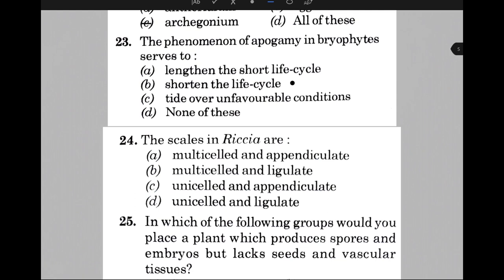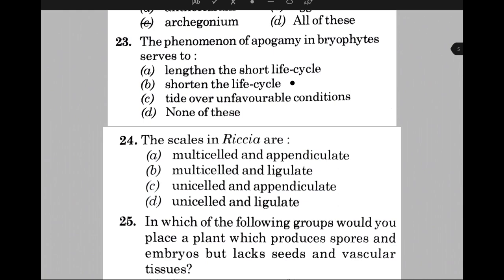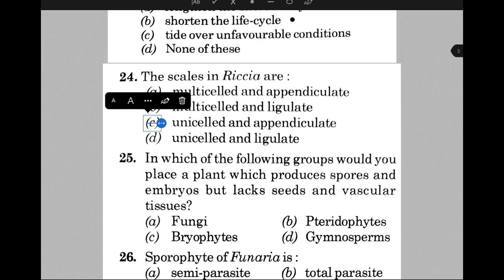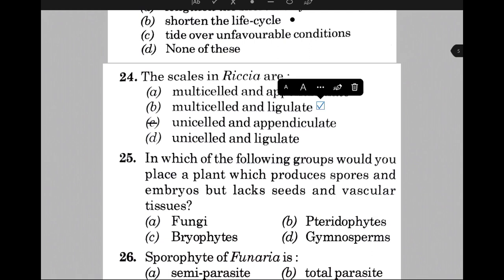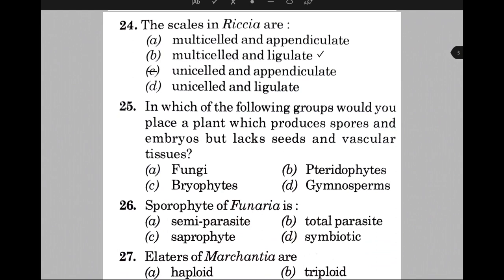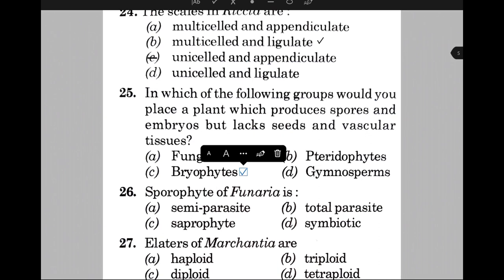The scale in Riccia — the answer is option B, that is multicellular and ligulate. In which of the following groups would you place a plant which produces spores and embryos but lacks seeds and vascular tissue? The answer is option C, that is bryophytes. Sporophyte of Funaria — the answer is A, that is semi-parasite.